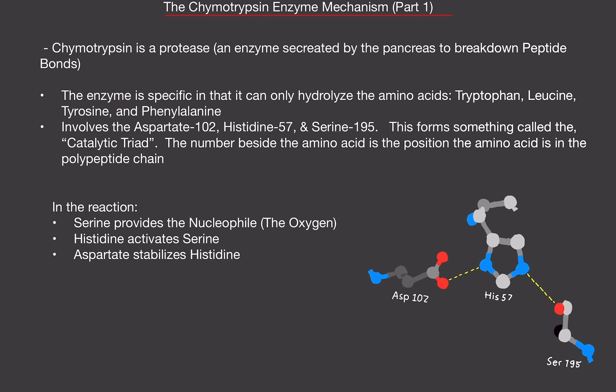In the protein folding video I made, I mentioned that these amino acids in this polypeptide chain like to fold in and interact with each other. So that's why we have 102, 57, and 195. There are huge gaps between these amino acids. It's because they're folding in and interacting with each other, and it creates this chymotrypsin enzyme.